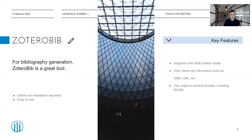Speaking of bibliography generation, I can also recommend ZoteroBib. It is also online and very easy to use. There are other bibliography generators but I'll discuss this one for now. The great thing about ZoteroBib is that it supports over 9,000 citation styles, so chances are if you want to cite things in a very specific way, ZoteroBib would support it. It only needs a single piece of key information such as an ISBN number, a URL, or the title of the paper, and it should be able to find it and generate the reference for you. Similarly to Mendeley, it can also output things in several formats including BibTeX.